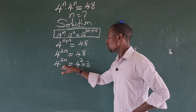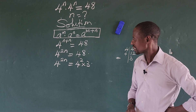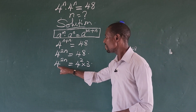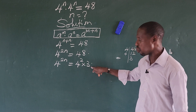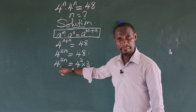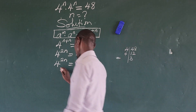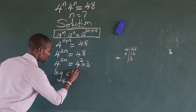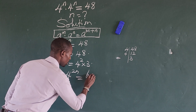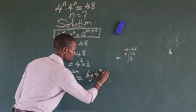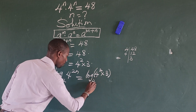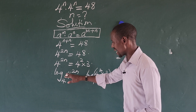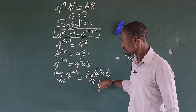Now we want to take log on both sides of the equation. Because we have base 4, we are going to take log base 4 on both sides. So we take log base 4 of 4 to the power of 2n, and that equals log base 4 of 4 squared times 3. There is a reason I chose base 4 — so that we can easily deal with what we're going to have from this step.